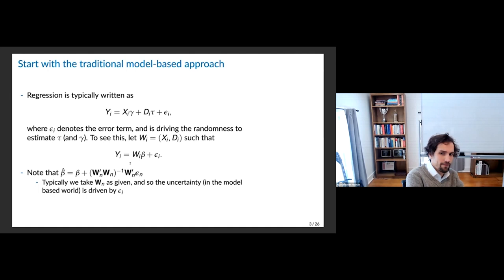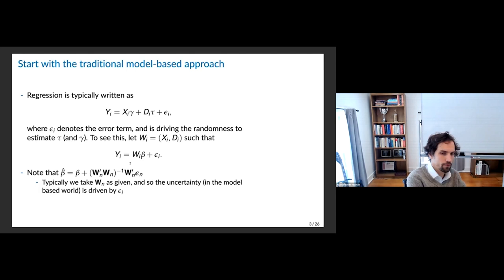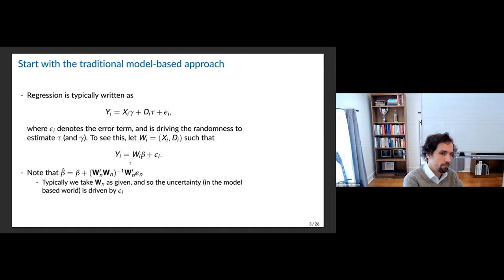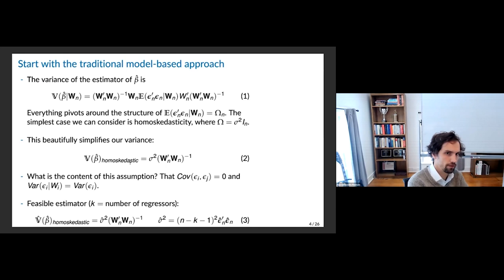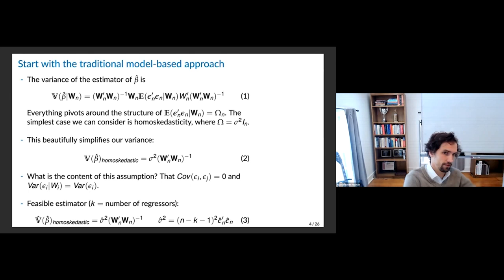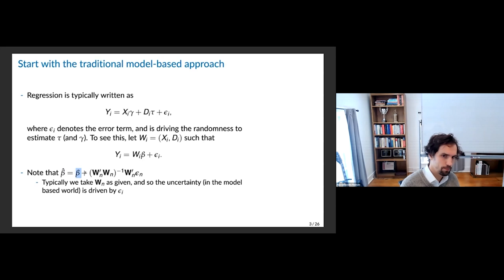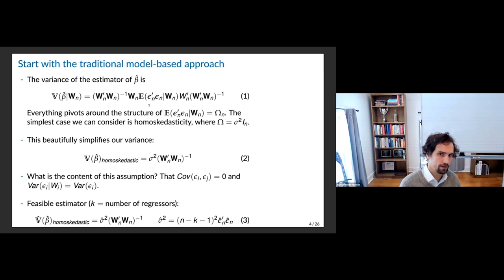Consistency or unbiasedness of our estimator typically comes from the idea that the expectation of epsilon conditional on W_N is equal to zero — that's a pretty common assumption. If you did that, then the expectation of beta hat would be equal to beta. But more interestingly, what we're going to talk about today is the variance of beta hat. The variance of our estimator is this big thing — it comes from taking the variance of beta hat minus beta, which involves the outer product of epsilon epsilon prime, which is an N by N matrix. We'll call it Sigma_N, and everything we're going to think about pivots around understanding the structure of this matrix.